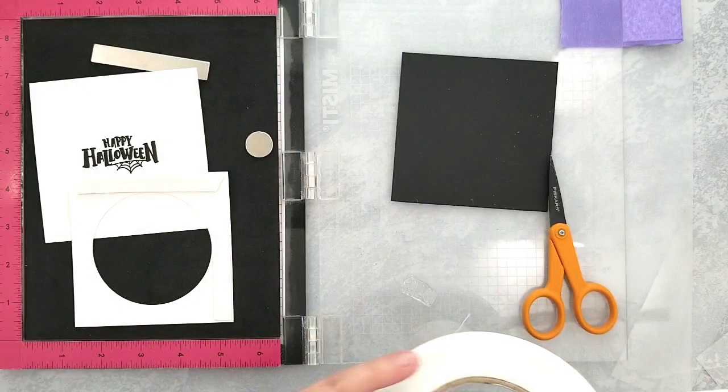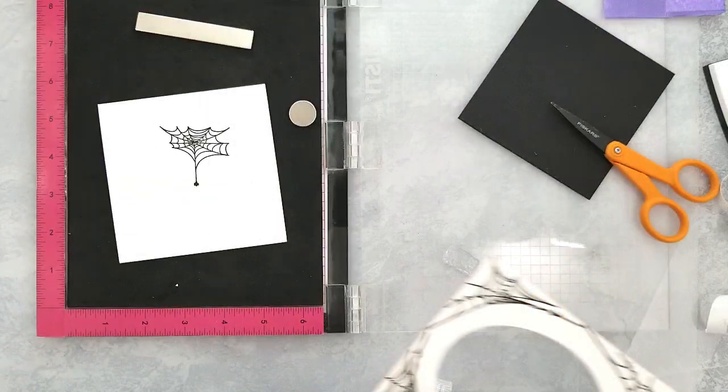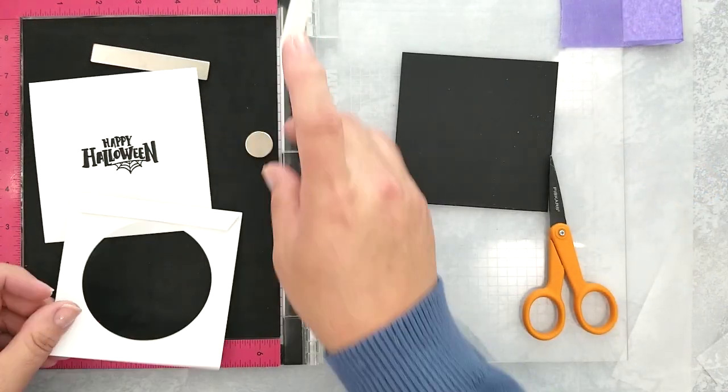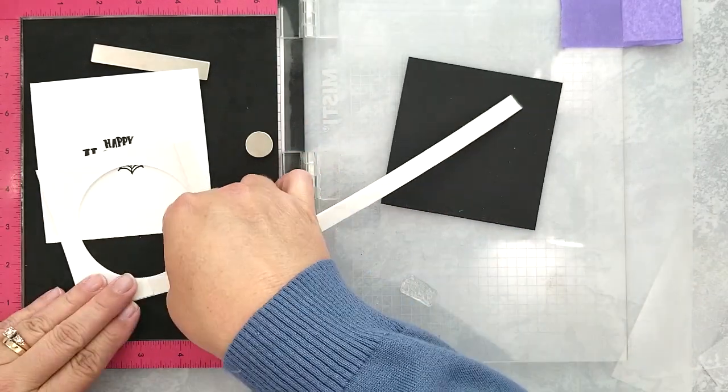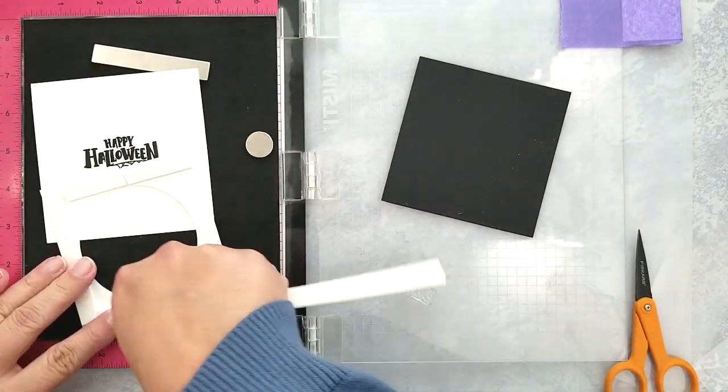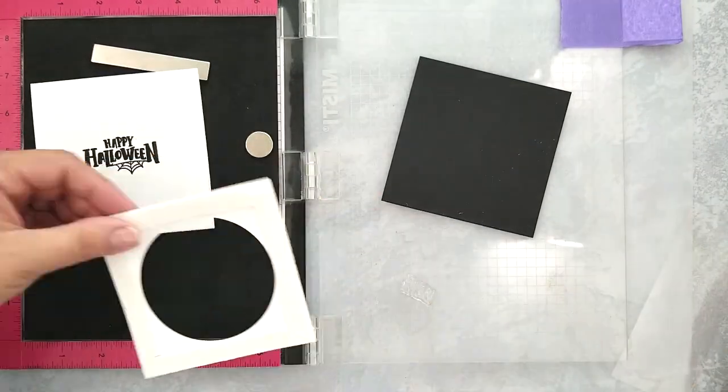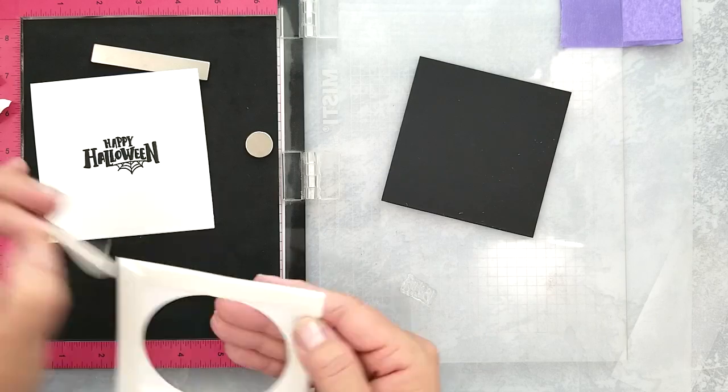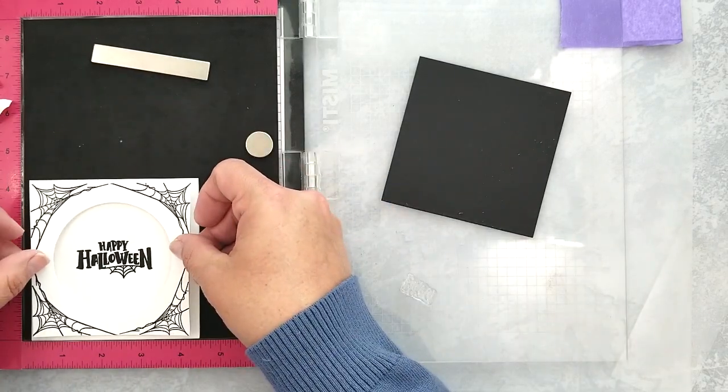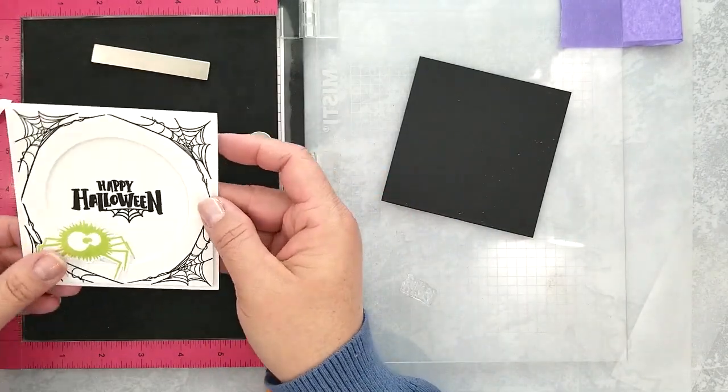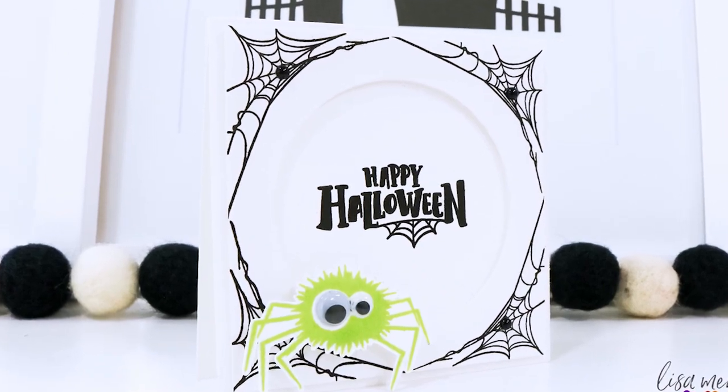To save some time, I stamped the Happy Halloween sentiment and cobweb in the center of a 4 1⁄4 by 4 1⁄4 inch card base. I'm adding 3D mounting foam to the back of two of the stamped and die-cut card panels and adhering them to the card bases with the stamped sentiment and cobweb. That finishes up the card bases and now we're ready to add our spiders and sentiments to the cards.